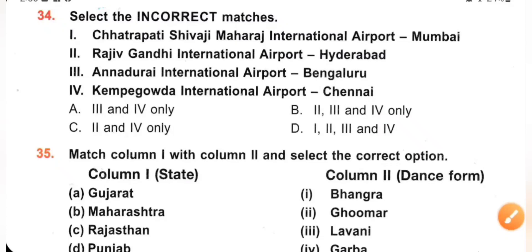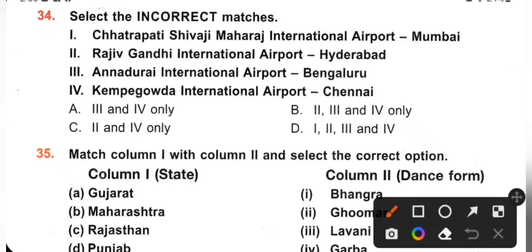Question 34: Select the incorrect match. 1. Chhatrapati Shivaji Maharaj International Airport, Mumbai — correct match. 2. Rajiv Gandhi International Airport, Hyderabad — correct match. 3. Anna International Airport, Bengaluru — incorrect, because Anna International Airport is in Chennai. 4. Kempegowda International Airport in Chennai — incorrect, because Kempegowda International Airport is in Bengaluru. So 3 and 4 are incorrect matches. Option A is the correct answer.